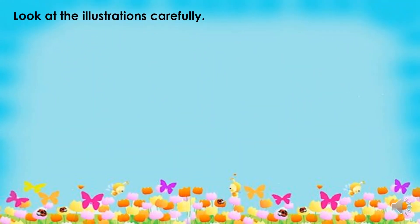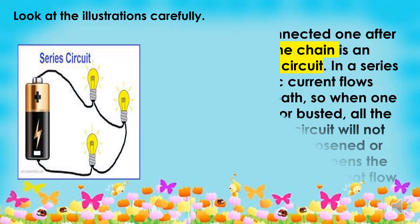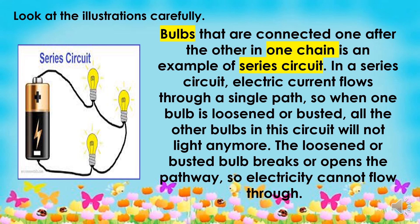Look at the illustrations carefully. Bulbs that are connected one after the other in one chain is an example of a series circuit. In a series circuit, electric current flows through a single path. So when one bulb is loosened or busted, all the other bulbs in this circuit will not light anymore. The loosened or busted bulb breaks or opens the pathway so electricity cannot flow through.